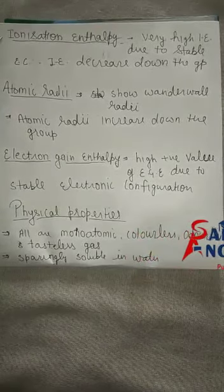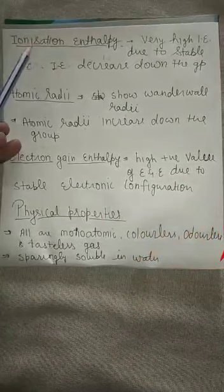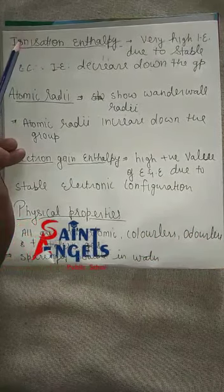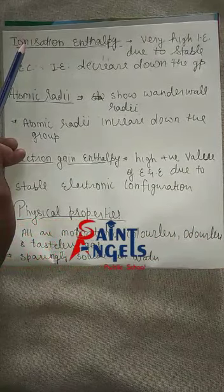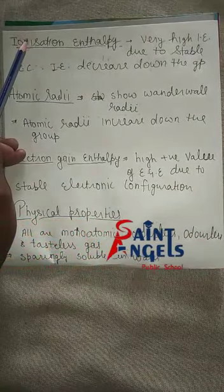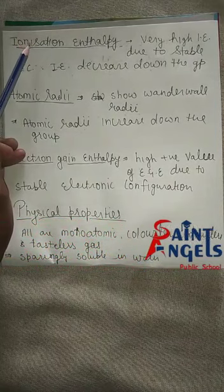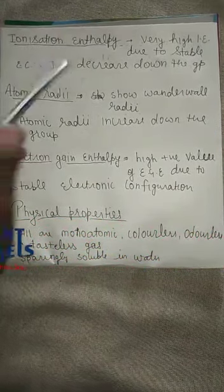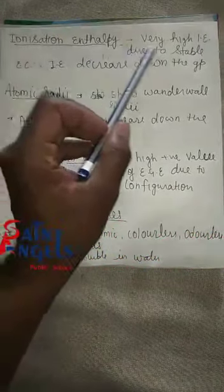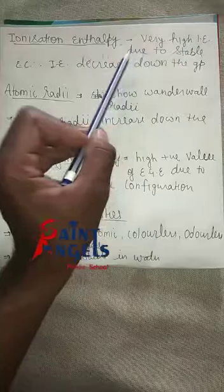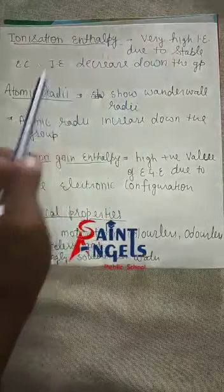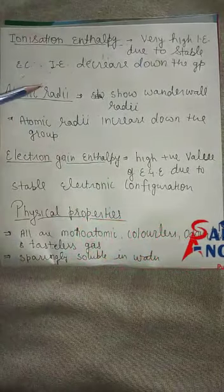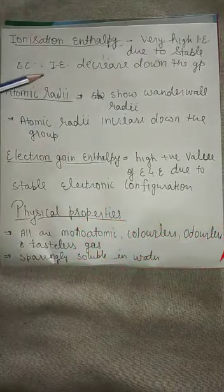Now, because the electronic configuration is stable and complete, removing an electron is not easy. That's why the ionization enthalpy is very high. They have very high ionization enthalpy due to their stable electronic configuration. And down the group, as usual, size increases.